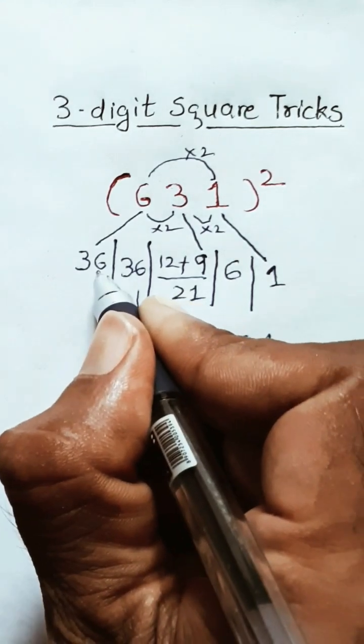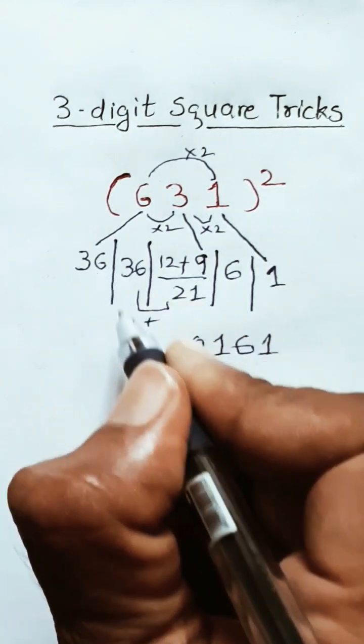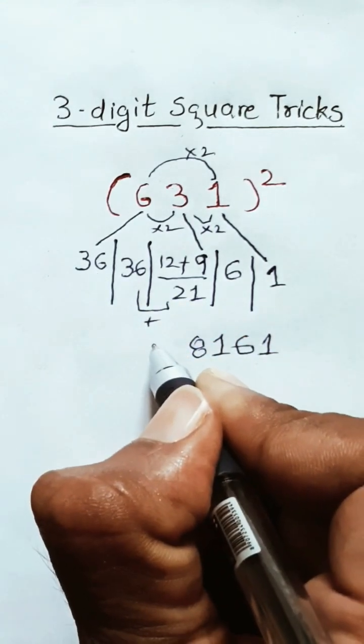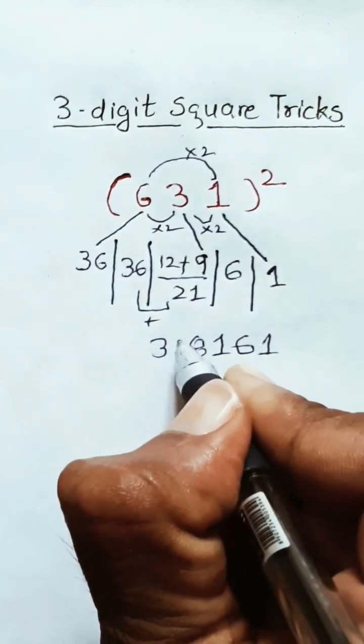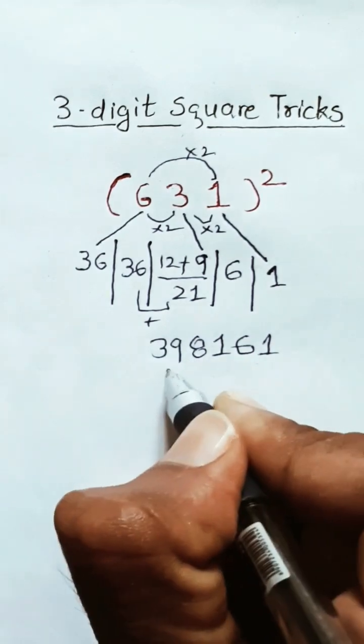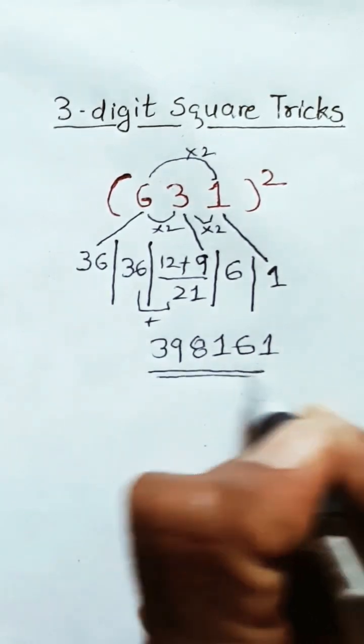Eight, carry 3; 3 plus 6 = 9; then 3, 9, 1 — the final answer is 18,496.